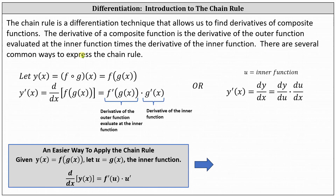There are several common ways to express the chain rule. If we have y of x equals f of g of x, then y prime of x, or the derivative of f of g of x with respect to x, is equal to f prime of g of x times g prime of x, where f prime of g of x is the derivative of the outer function f evaluated at the inner function g of x, and g prime of x is the derivative of the inner function.